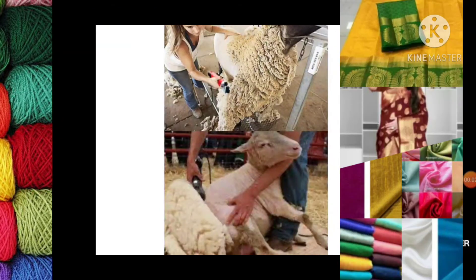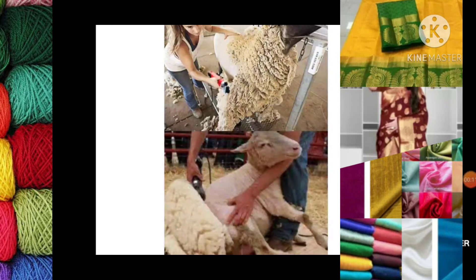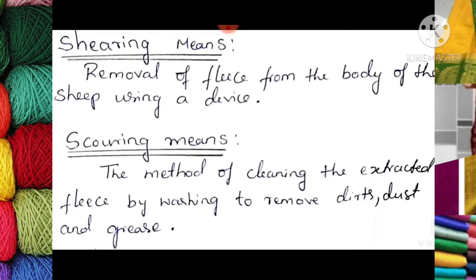This picture shows how shearing of wool from the body of the sheep is done without hurting the sheep. It is like a haircut or cutting nails from our body — an extra growth that is removed periodically. Removal of fleece from the body of the sheep is done using a device, and it doesn't hurt the sheep in any way.